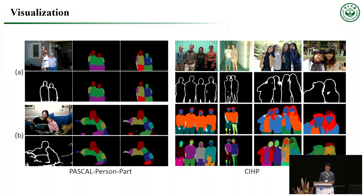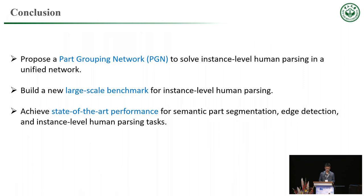Here comes our conclusion. In this work, a novel Part Grouping Network, PGN, is proposed to solve multi-person human parsing in a unified network by reformulating it as two twin grouping tasks that can be mutually refined: semantic part segmentation and instance-aware edge detection. We also built a new large-scale benchmark, CIHP, for instance-level human parsing to push the research boundary of human parsing to better match real-world scenarios. Our PGN achieves state-of-the-art performance on semantic part segmentation, edge detection, and instance-level human parsing tasks.